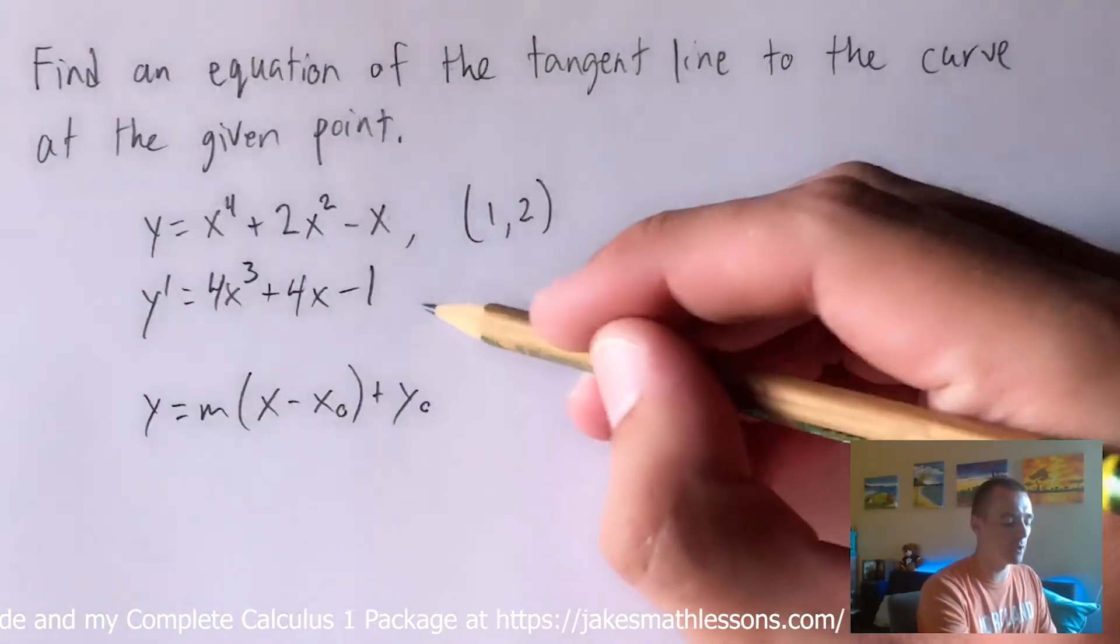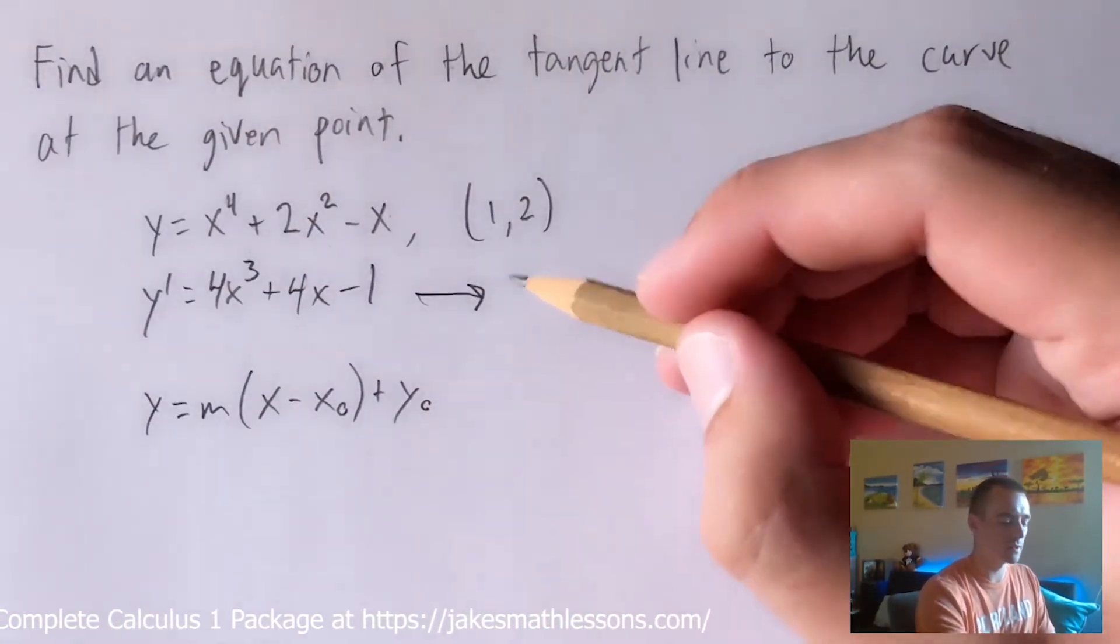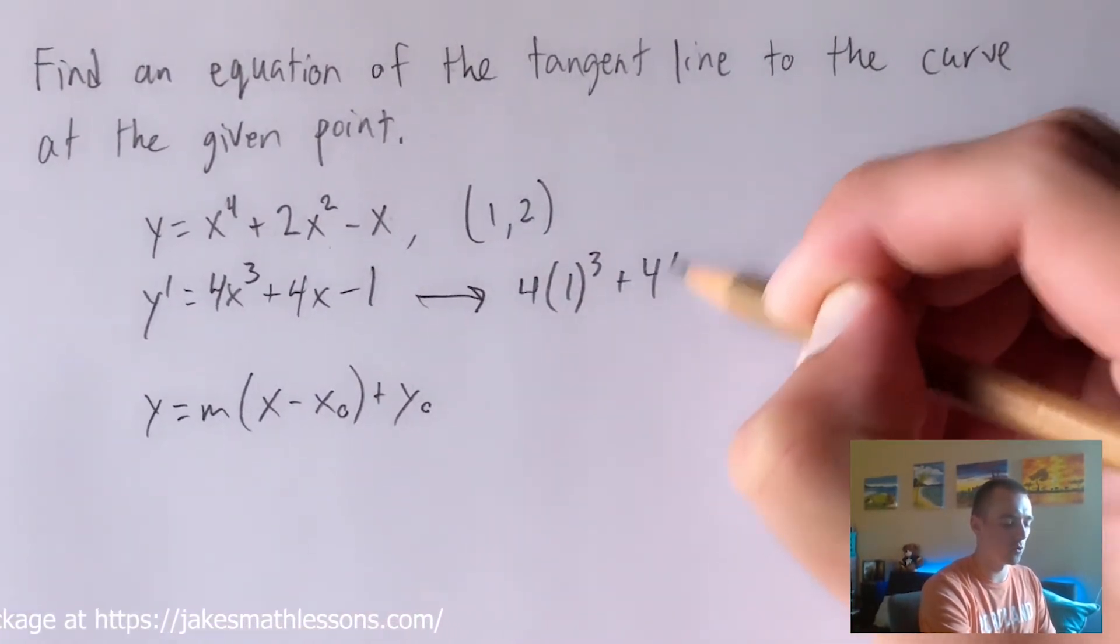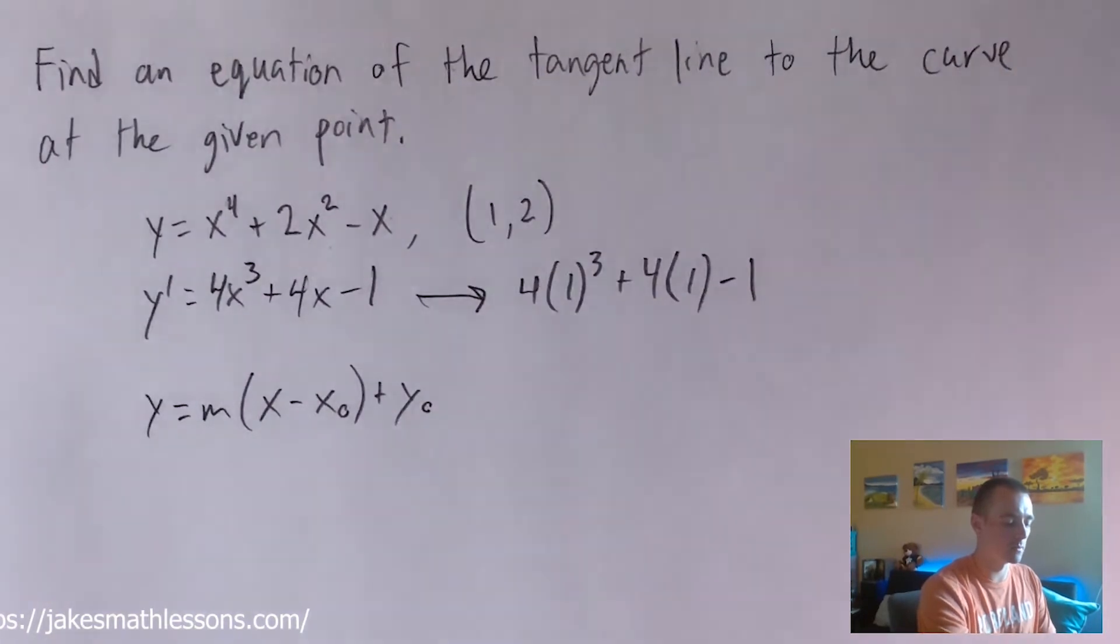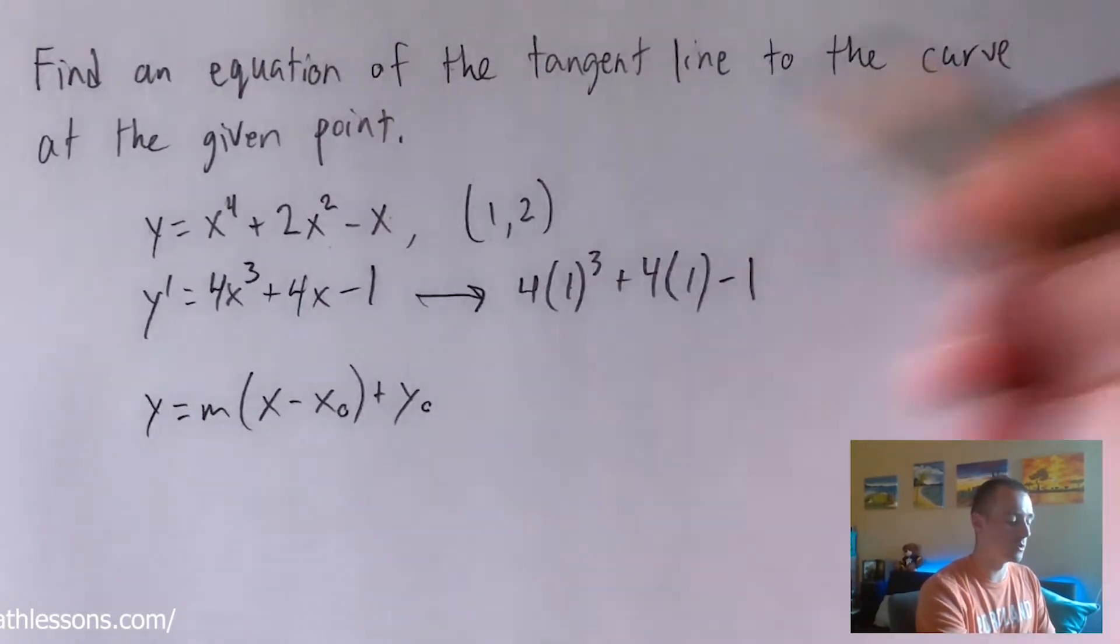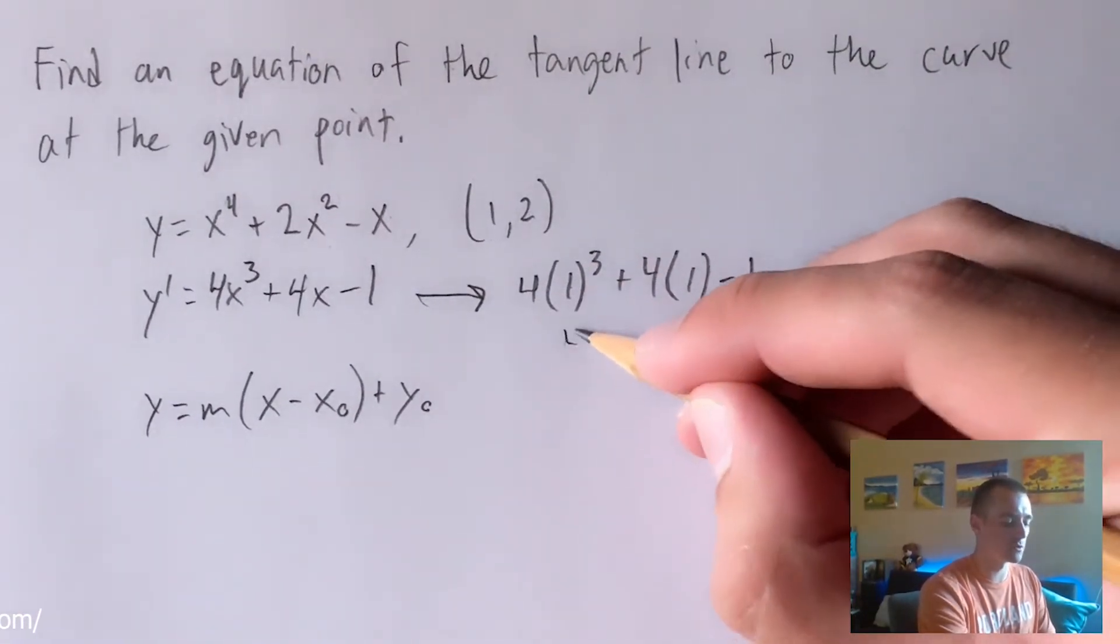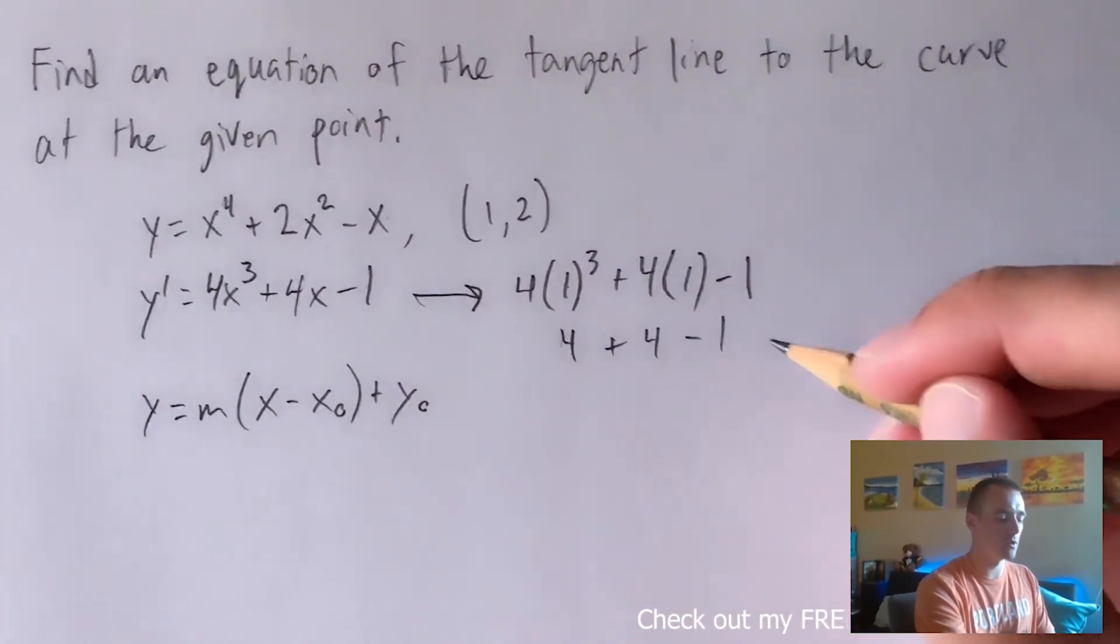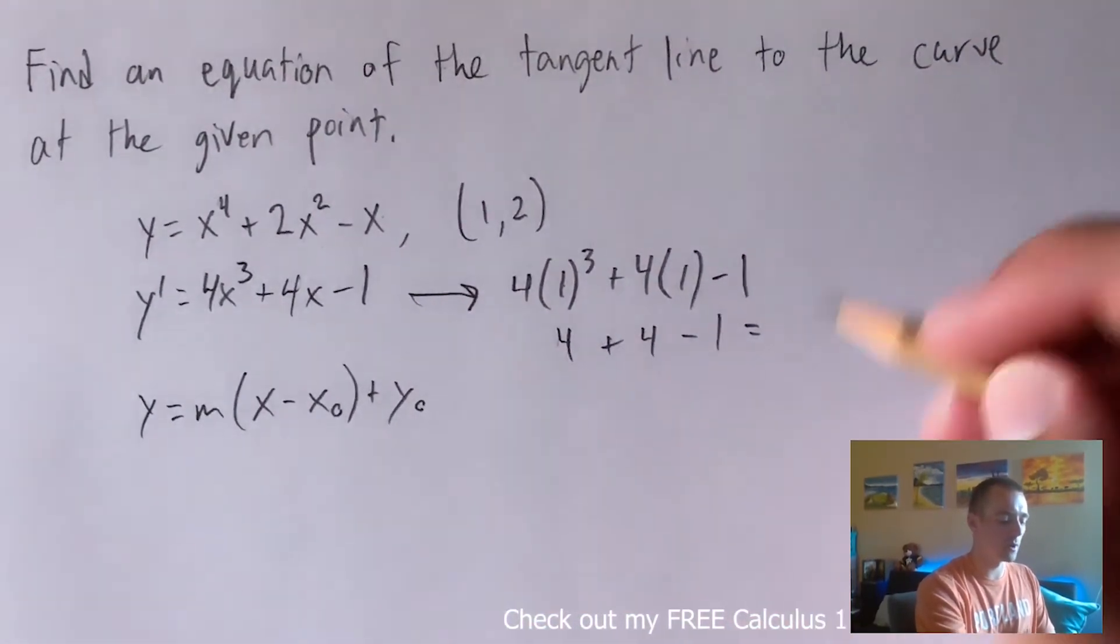So if we plug in 1 for x into this we're going to get 4 times 1 cubed plus 4 times 1 minus 1. 1 cubed is just 1 so we're going to get 4 times 1 which is 4 plus 4 times 1 which is 4 minus 1. 4 plus 4 minus 1 is 7.